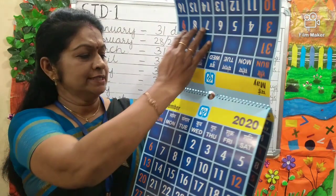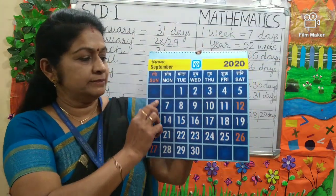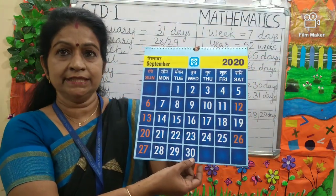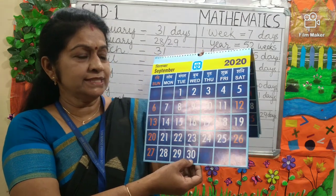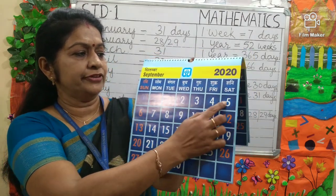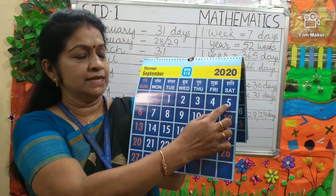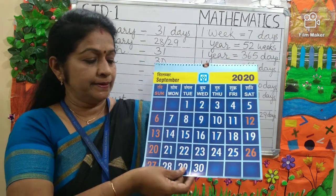Next is September. September has how many days? 30 days. Can you tell me which day is Teacher's Day? 5th September — it is Saturday.